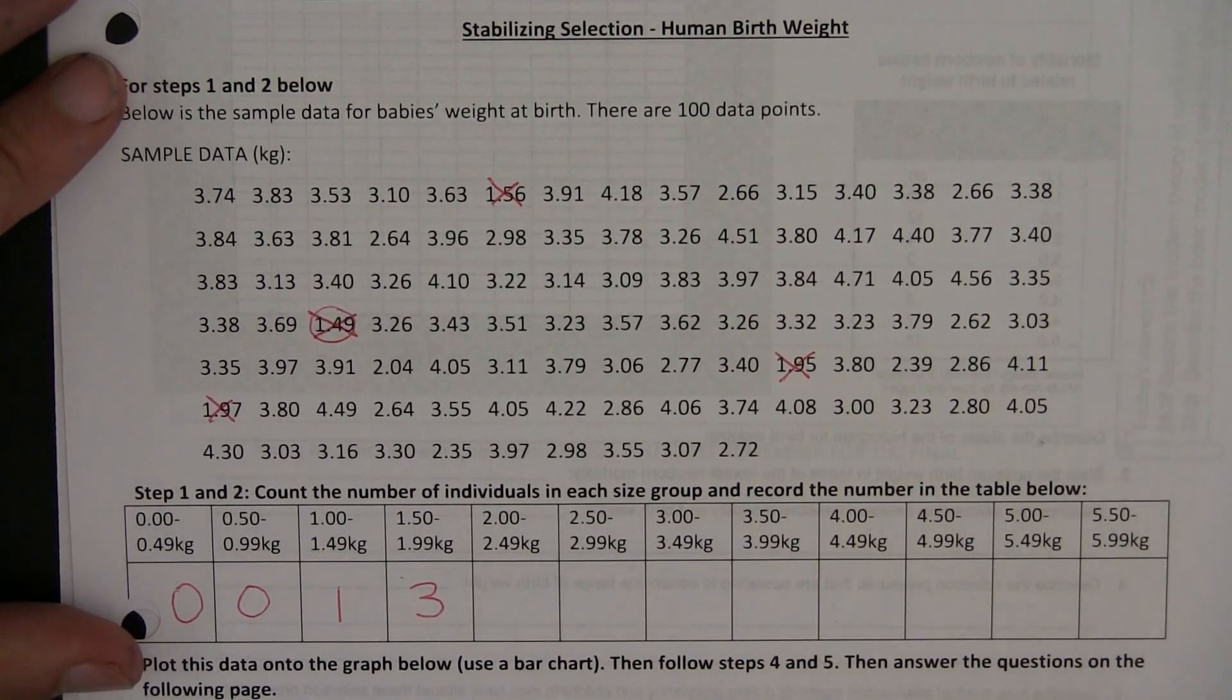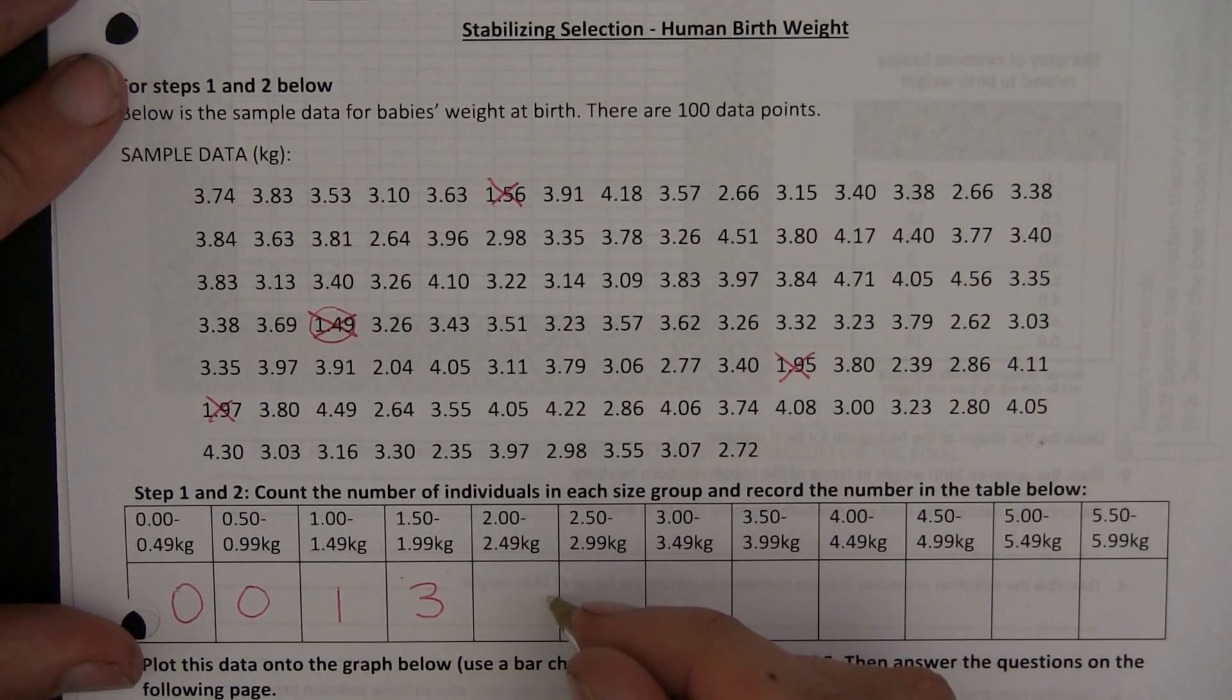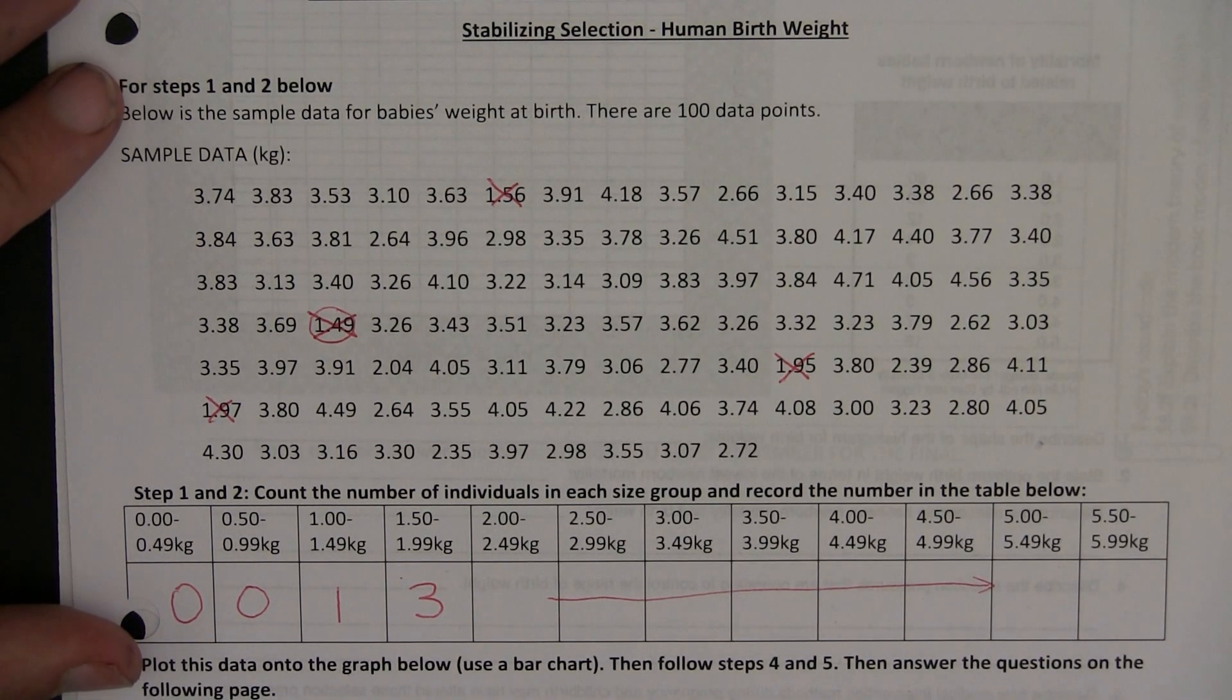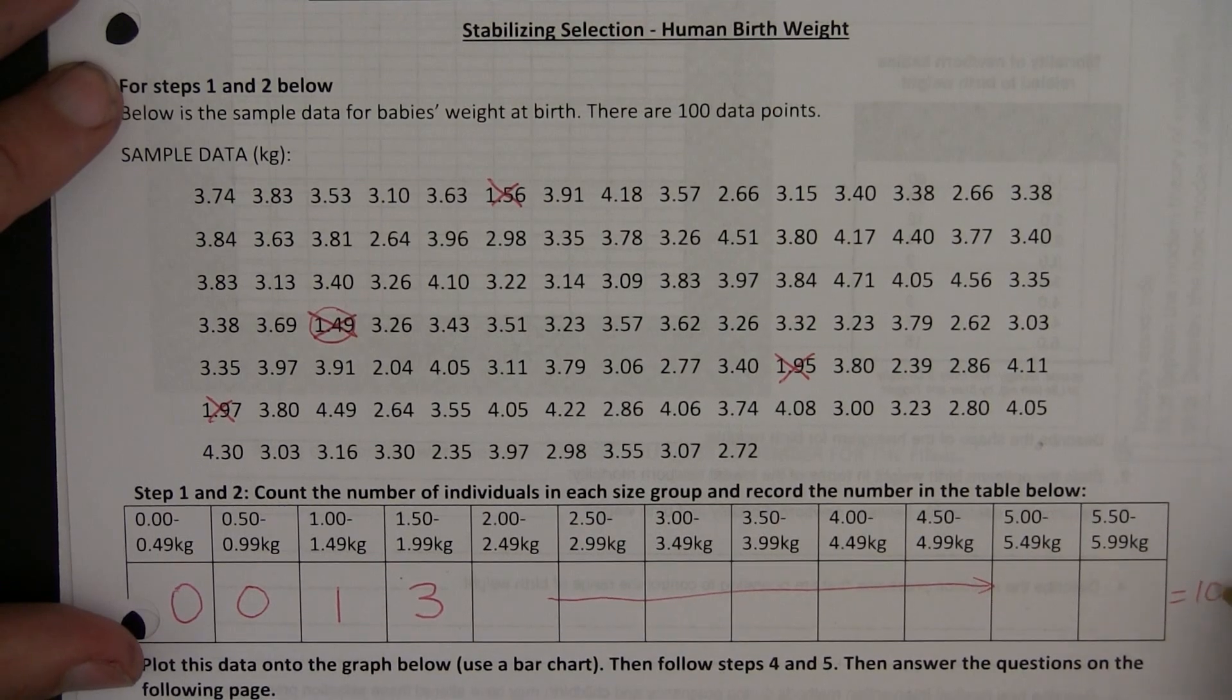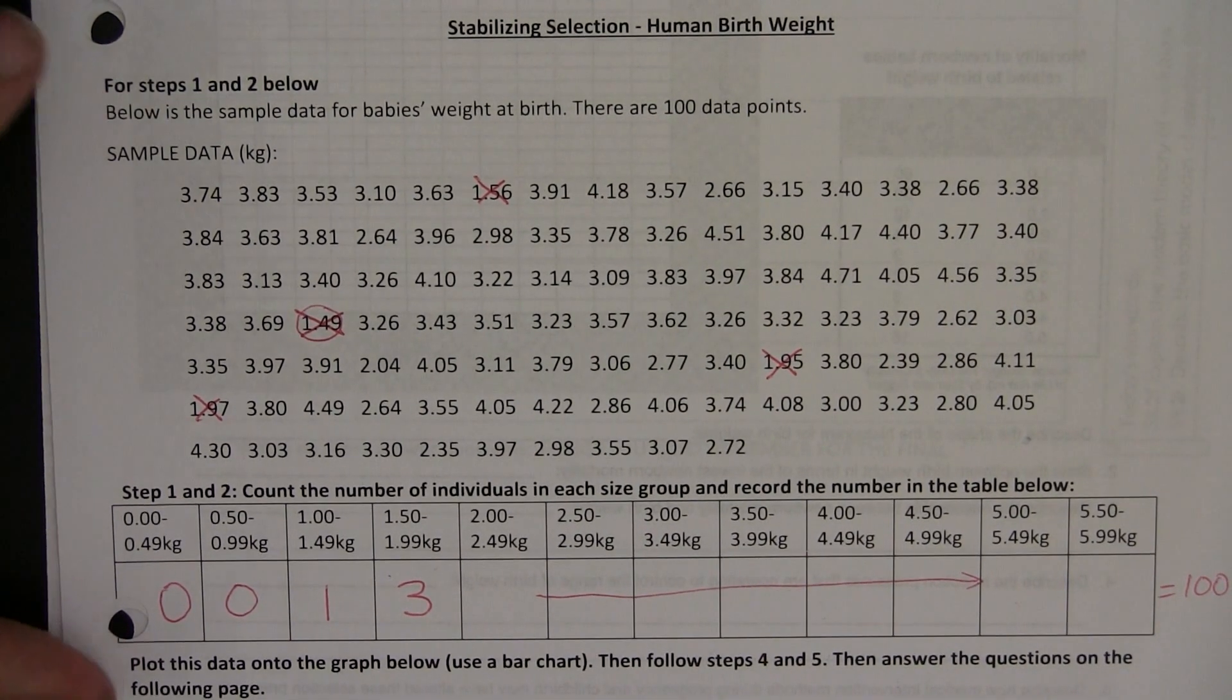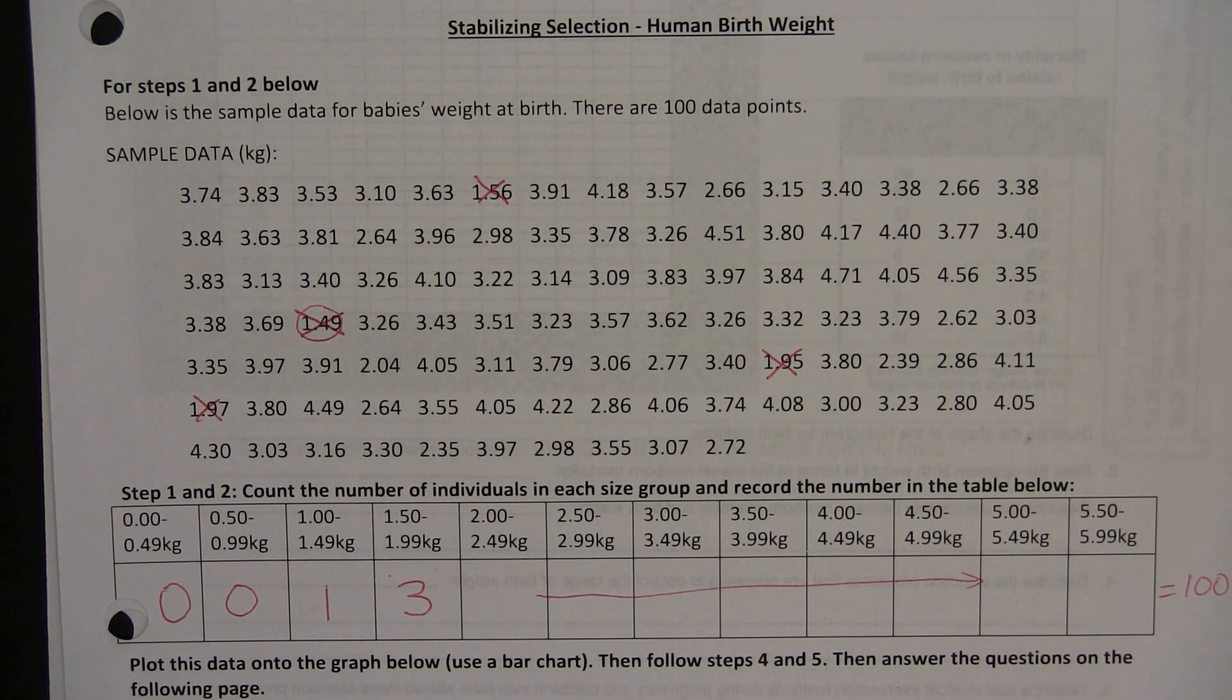What you need to do for your homework, I've already given you the first four boxes here, is to count the number of individuals that belong in each of those weight categories. Your total should equal 100. If you get 100, that means that you've counted all of them. So that's just the first part of your homework. You're working out how many different babies belong to each of these weight categories.